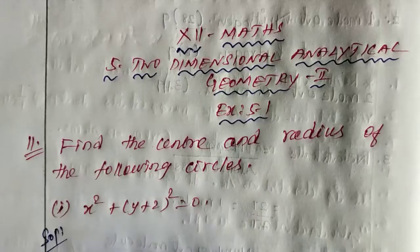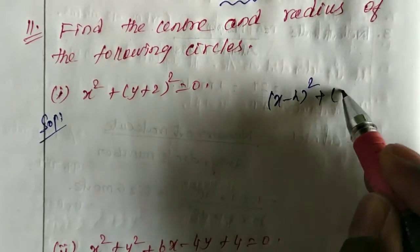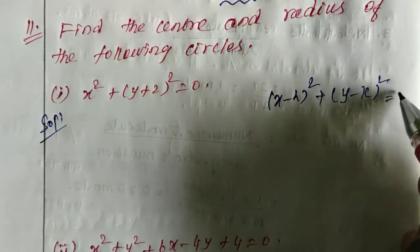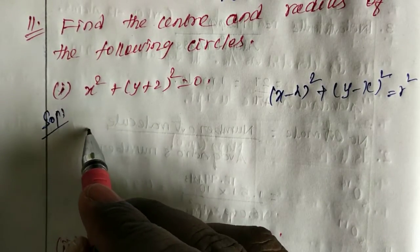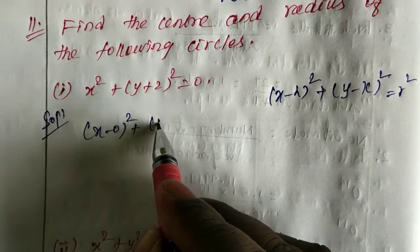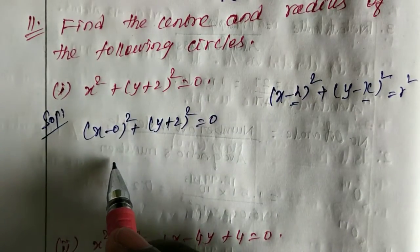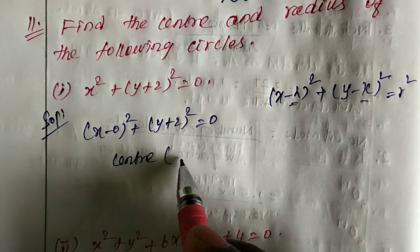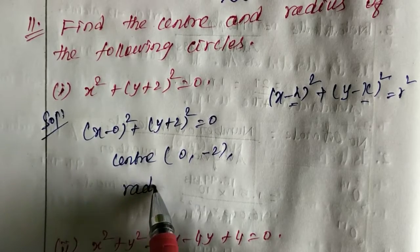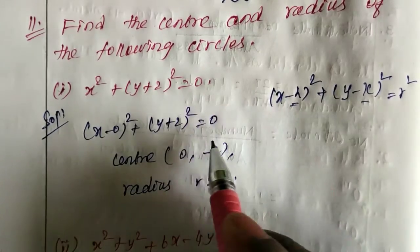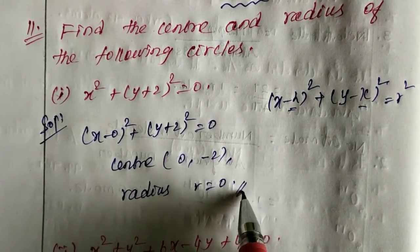This is of the form x minus h whole square plus y minus k whole square equal to r square. Here it is of the form x minus 0 whole square plus y plus 2 whole square equal to 0. Now h and k: center is (0, -2) and radius r square equal to 0, so r equal to 0. That's all for first subdivision.